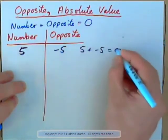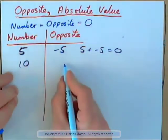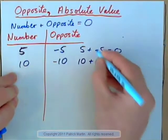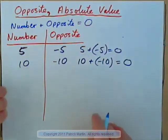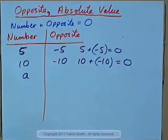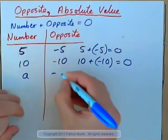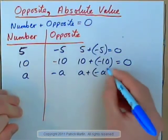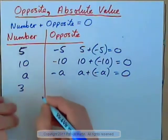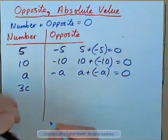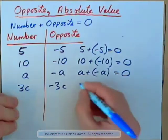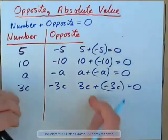5 plus negative 5 gives 0. If the number was 10, write down what the opposite would be. The opposite of 10 is negative 10, because 10 plus negative 10 is 0, right? So what's the opposite of an apple? The opposite of a, for example, would simply be negative a. An apple plus a negative apple leaves us with nothing, right? Or if we had 3 cherries, what's the opposite of 3 cherries, 3c? Well, it would just be negative 3c, because 3 cherries plus negative 3 cherries gives 0. The number plus its opposite gives 0.